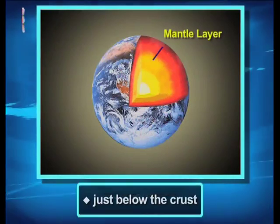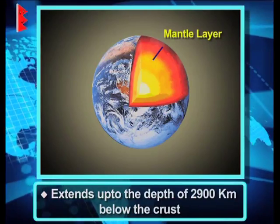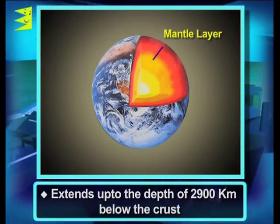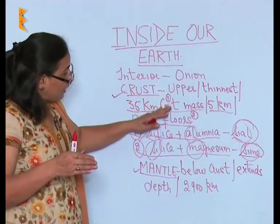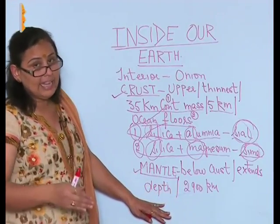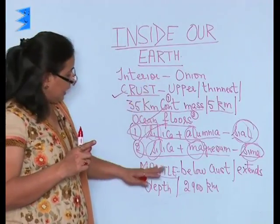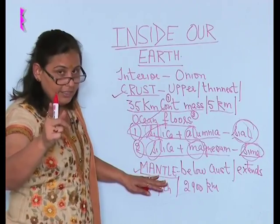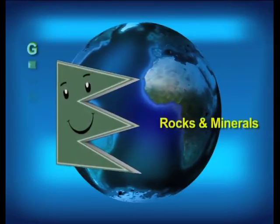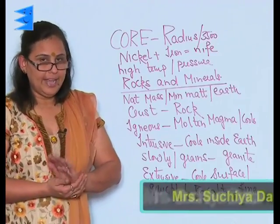The second layer of the earth is called the mantle. This layer is just below the crust and it extends up to a depth of 2900 kilometers below the crust. So to recap: the first layer is the crust, the second is the mantle, and the third is the core.